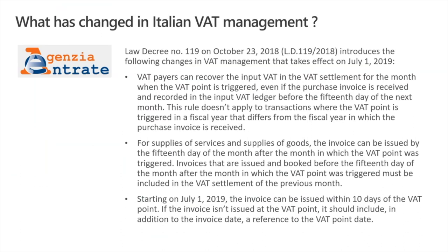In particular, Article 12 of the decree modified the time limit for recording sales invoices in the output VAT ledger. According to the new rule, a sales invoice could be recorded in the output VAT ledger at the latest by the 15th of the month following that in which the transaction takes place, but always including the output VAT in the VAT settlement of the month when the tax point was triggered. Thus, a sales invoice issued on 20th of April can be booked within the 15th of May by including the related output VAT in the VAT settlement of April.